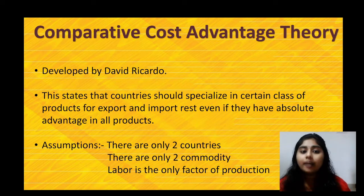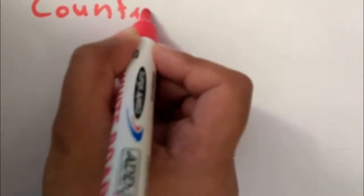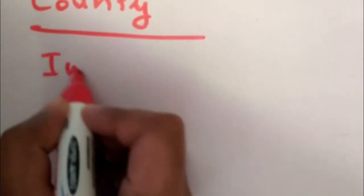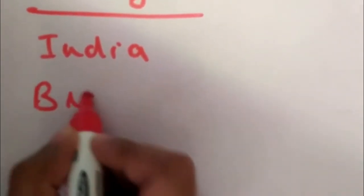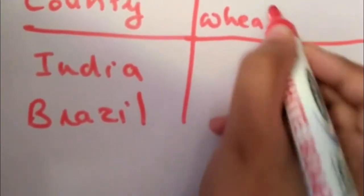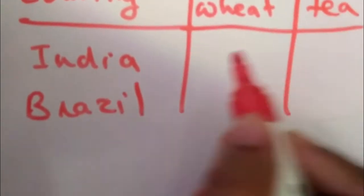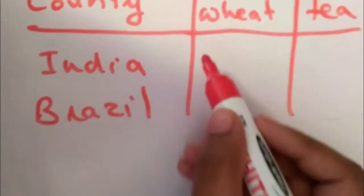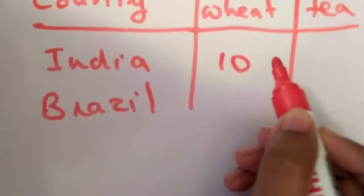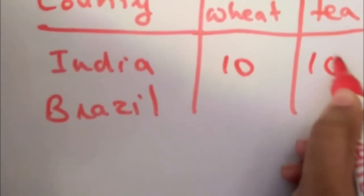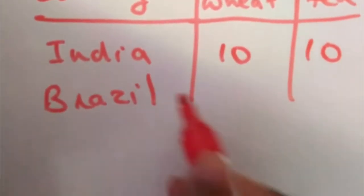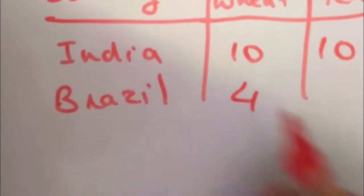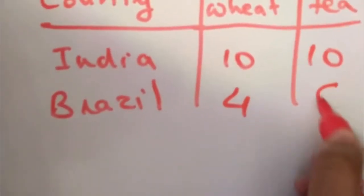Let's learn comparative cost advantage theory with an example using two countries and two products. We are taking India and Brazil, with two products: wheat and tea. Assuming there is only one employee — in India, one employee can produce 10 kg of wheat and 10 kg of tea. In Brazil, that one employee can make 4 kg of wheat and 6 kg of tea.